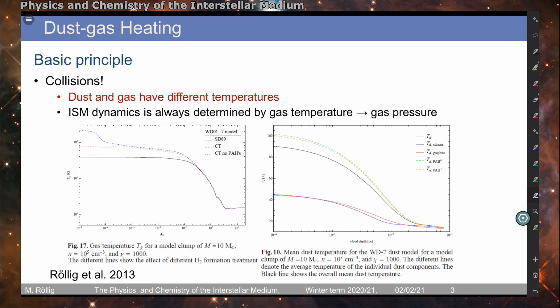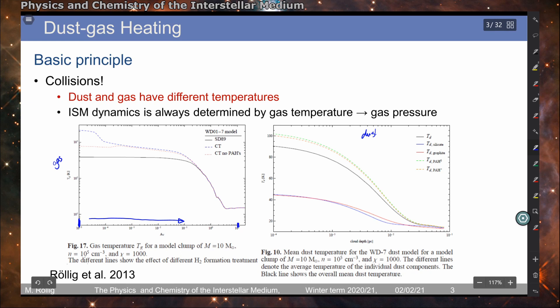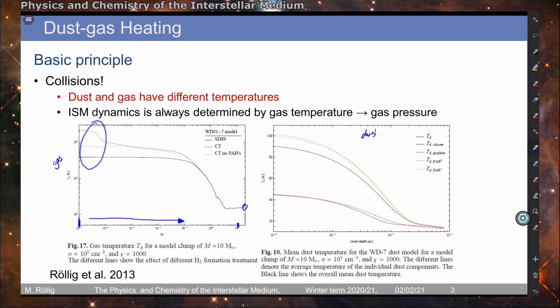This is shown here in the figure — these are model computations of a PDR model. On the left we see the gas temperature. And this is the dust temperature. We have here the surface, or regions close to the surface of the cloud, and here the center — so we go deeper into the molecular cloud in this direction. You see that on the surface we have temperatures in the regime of many hundreds or even a few thousand Kelvin, while when we move deep into the cloud we have something between 10 and 20 Kelvin gas temperature. The different lines are from different model assumptions including or excluding certain heating mechanisms.